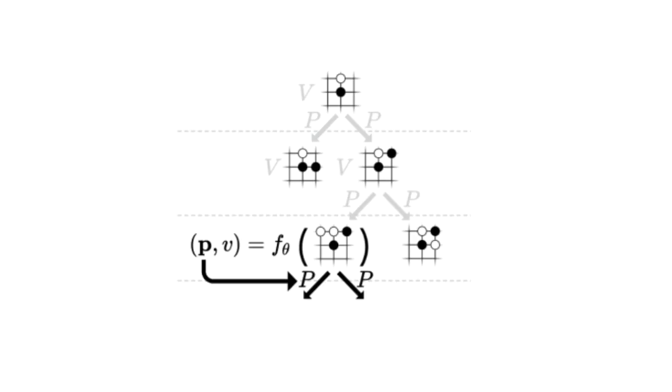Initially, the neural network predicts some output move probabilities P, but AlphaGo Zero is not very confident in this policy determined by the neural network, and it is right to think so. After all, we just randomly initialized our neural network with some weights. We should just take the current predictions of P with a grain of salt.